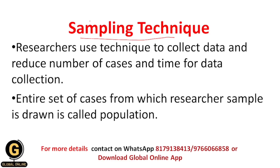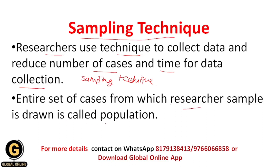It is doubtful that a researcher should be able to collect data from all cases. So there is a need to select a sample. Researchers use a technique to collect data and reduce the number of cases and time for data collection, and that technique is called the sampling technique. The entire set of cases from which a researcher's sample is drawn is called the population. The sample we take from the population is used in our research.